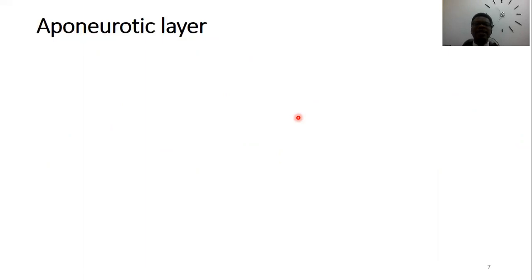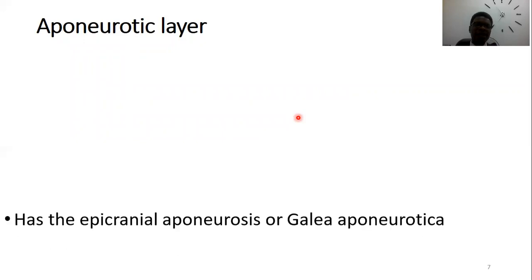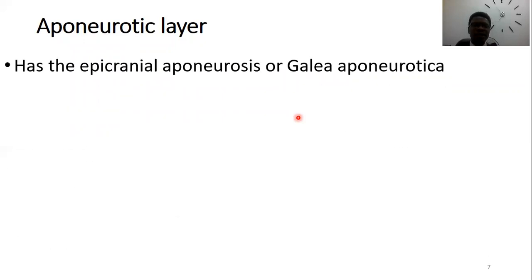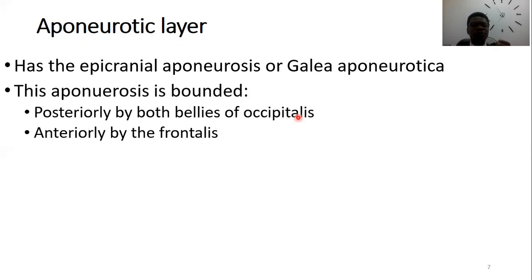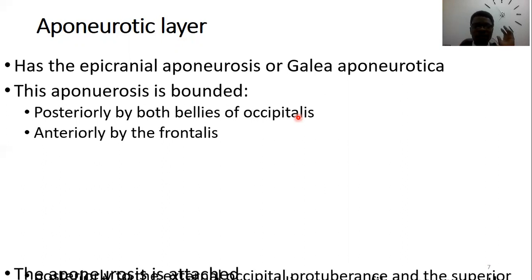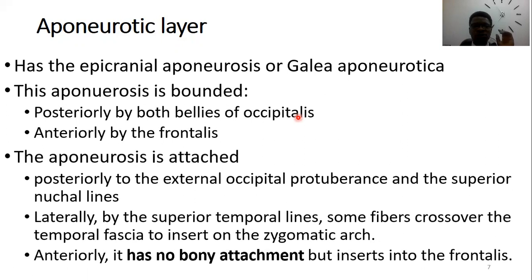The next layer is the aponeurotic layer. This is a layer that has an aponeurosis — what they call the galea aponeurotica, also known as the epicranial aponeurosis — that connects two muscles. Anteriorly, the frontalis muscle, and posteriorly, the occipitalis muscle. I'll show you a picture shortly on how this aponeurosis connects these two muscles.